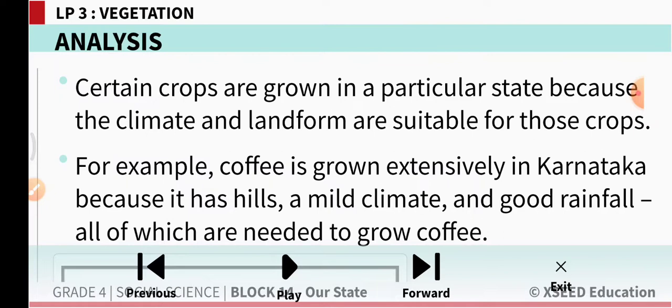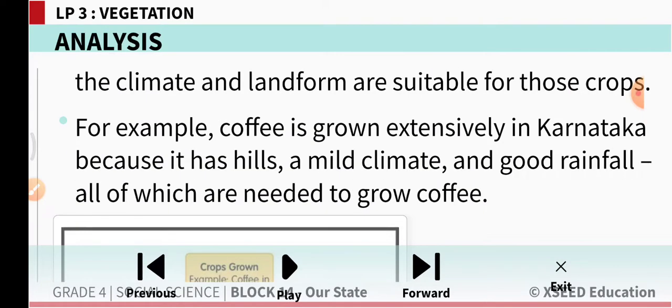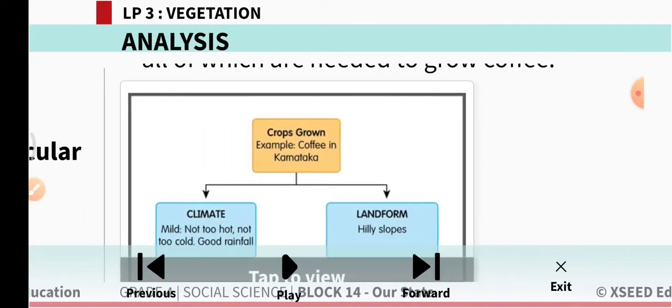For example, coffee is grown extensively in Karnataka because it has hills, a mild climate, and good rainfall — all of which are needed to grow coffee.